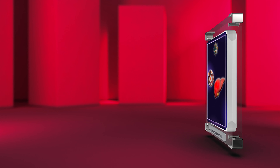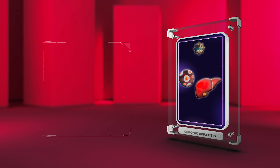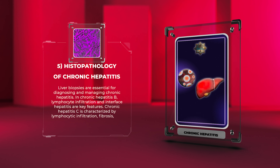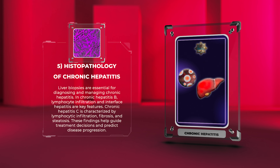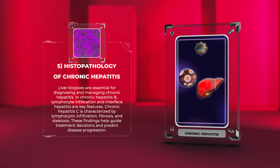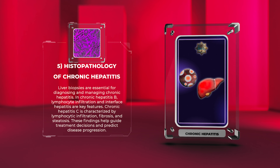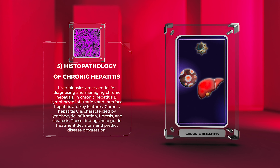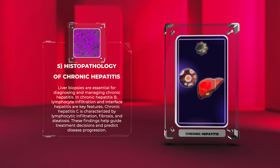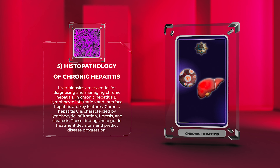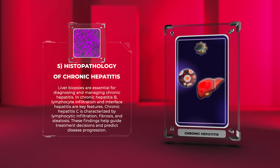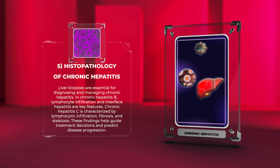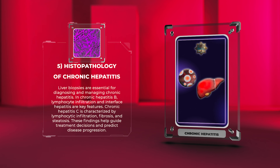Liver biopsies are essential for diagnosing and managing chronic hepatitis. In chronic hepatitis B, lymphocyte infiltration and interface hepatitis are key features. Chronic hepatitis C is characterized by lymphocytic infiltration, fibrosis, and steatosis. These findings help guide treatment decisions and predict disease progression.